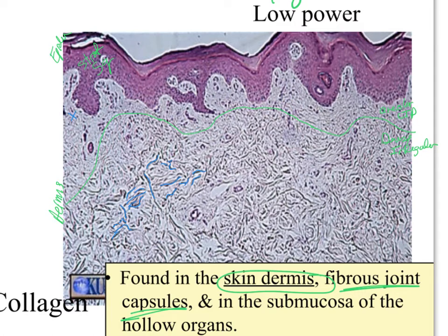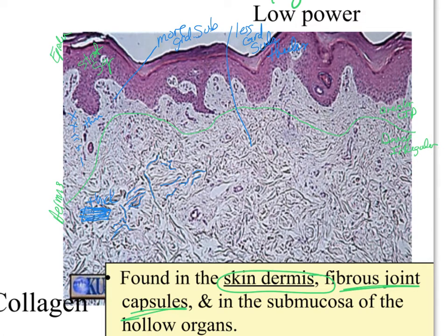Up in the areolar, I have collagen fibers as well, and if I look closely, I can also see that they're going in different directions. What I notice is that these collagen fibers in the dense irregular are thick, whereas the collagen fibers in the areolar are thin, which means I have more ground substance in the areolar — so it's loose — and less ground substance in the dense irregular. Both places can resist tension in multiple directions, but the dense irregular will be much better at resisting tension in multiple directions.